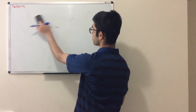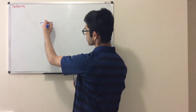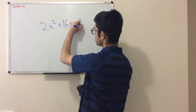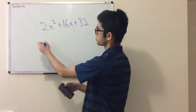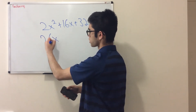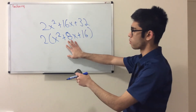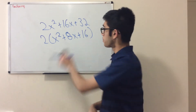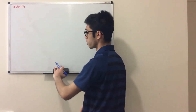Now we're going to talk about cases where you need a greatest common factor. For example, 2x squared plus 16x plus 32 — you can look for the GCF, which is 2, and get 2(x squared plus 8x plus 16), then factor normally. But there are cases when you won't have that greatest common factor.